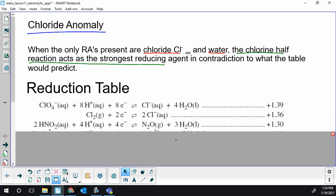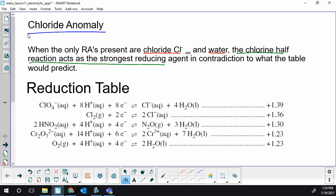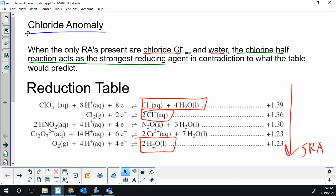So when I say the chlorine half reaction, I'm referring to the chlorine-chloride. So anytime you see chlorine and water as your RAs, you need to write chloride as the strongest RA, the one that's going to react at the anode, not water. And that's kind of all there is, you just have to be able to identify it.